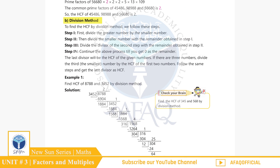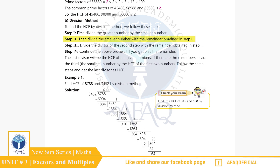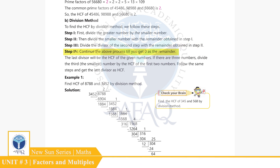HCF معلوم کرنے کا دوسرا method ہے Division Method۔ Step 1: بڑے number کو چھوٹے number پر تقسیم کریں۔ Step 2: چھوٹے number کو Step 1 کے remainder پر تقسیم کریں۔ Step 3: Step 2 کے divisor کو Step 2 کے remainder پر تقسیم کریں۔ یہ process تب تک جاری رکھیں جب تک remainder zero نہ ہو جائے — آخری divisor ہمارا HCF ہوگا۔